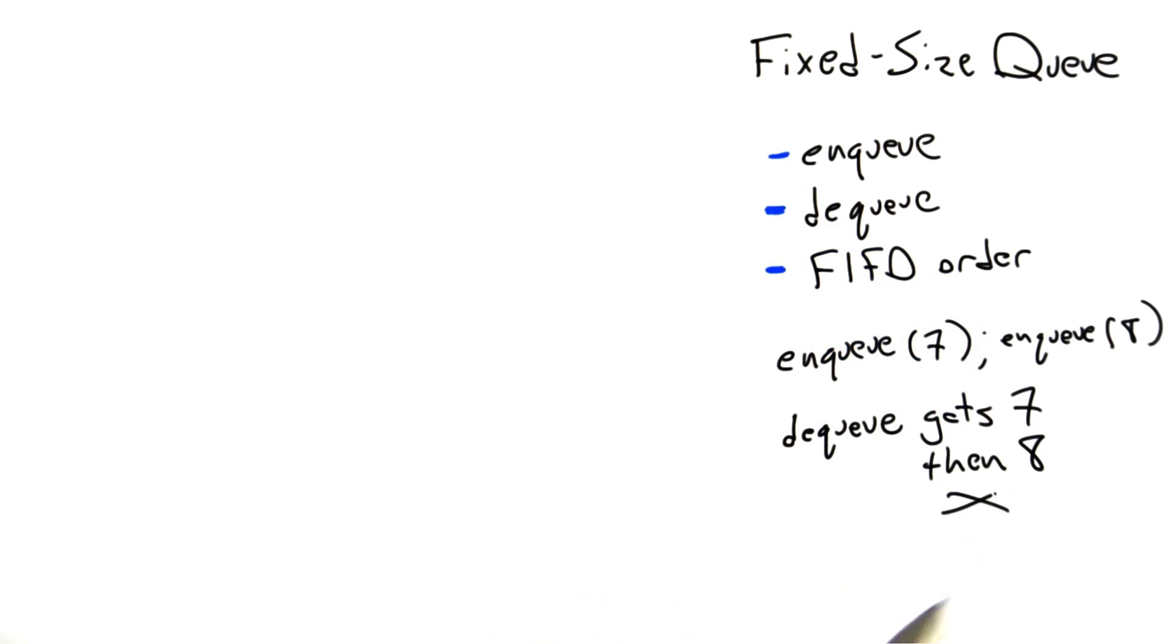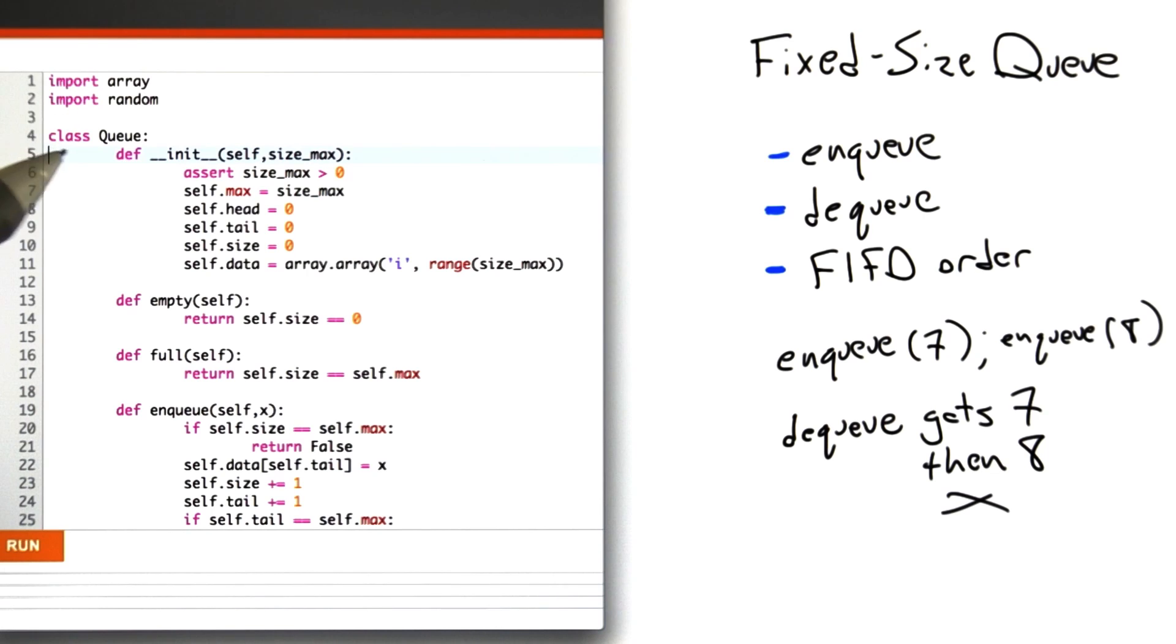Now let's look at some code. On the implementation side, we have a Python object called queue. The constructor is going to take a size_max argument that determines the largest number of objects that can be stored in our queue.